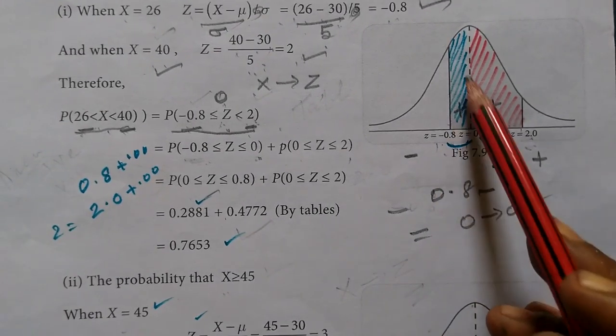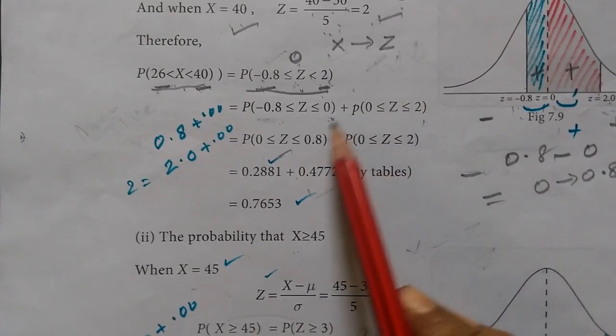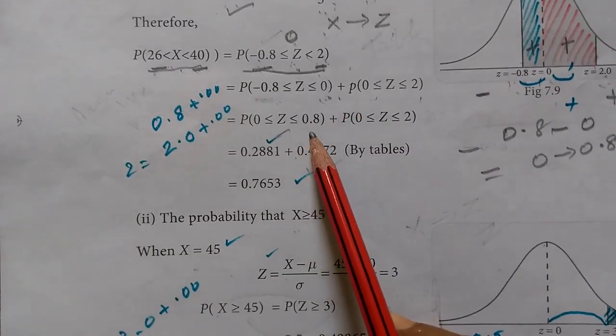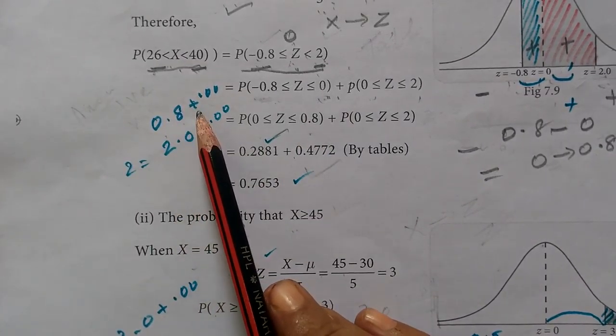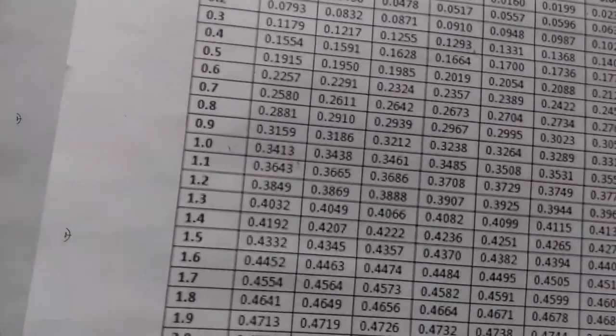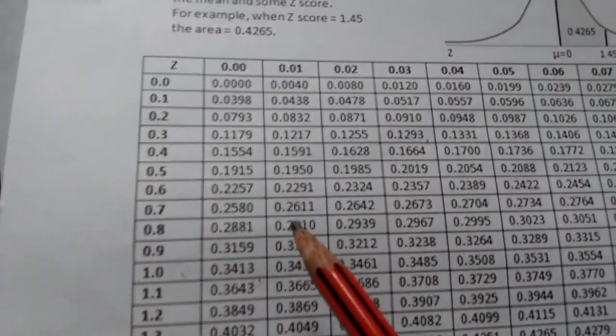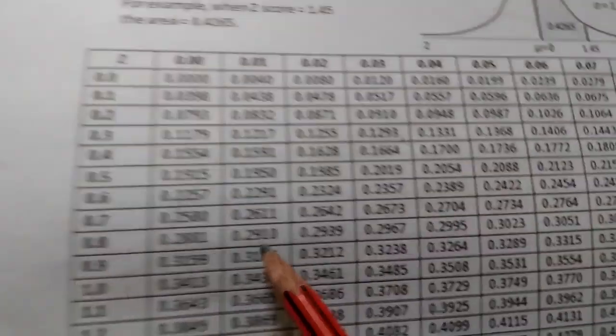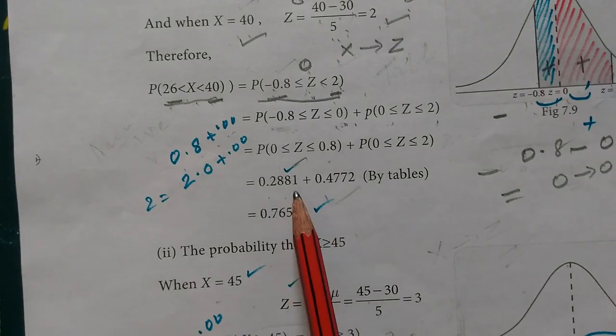The area is symmetric, so we look up 0.8 in the table. For Z equals 0.8, the middle column shows 0.2881.